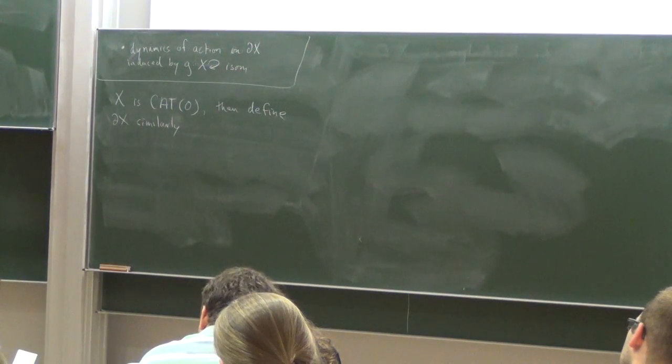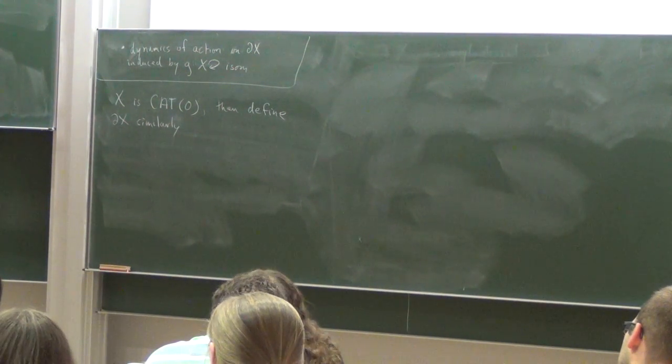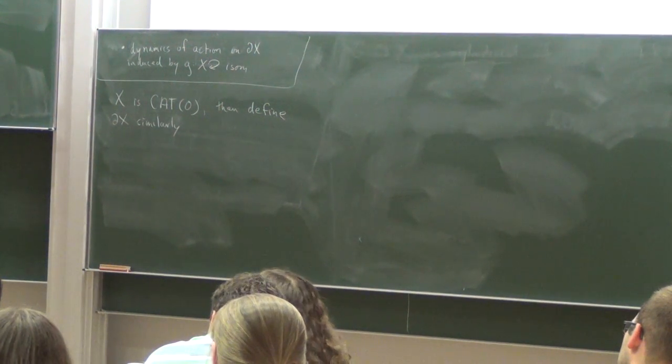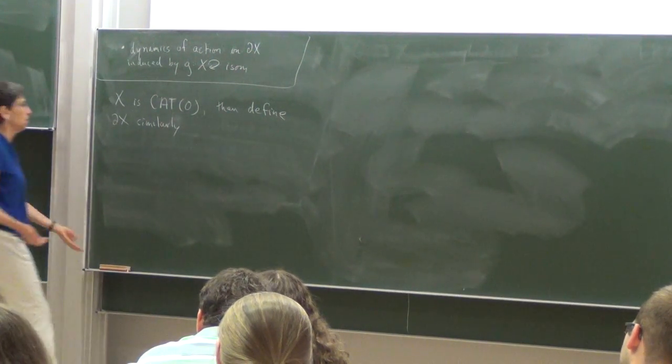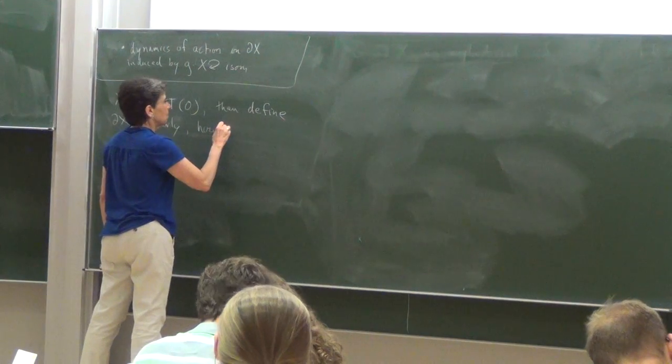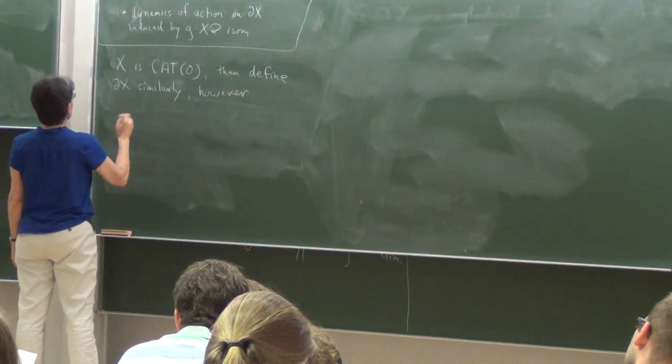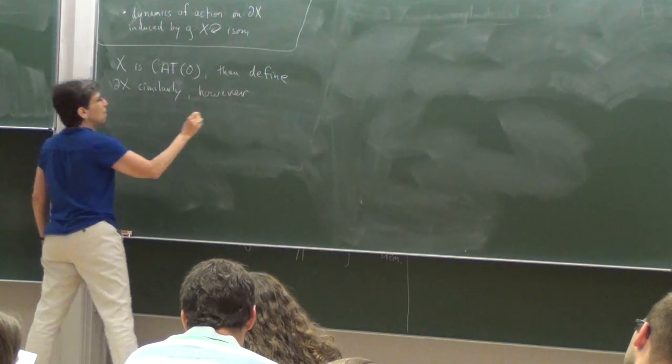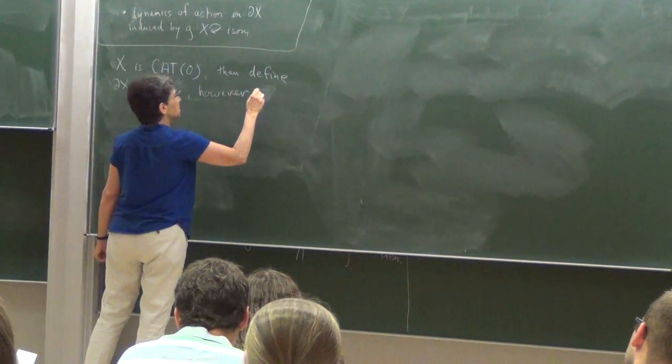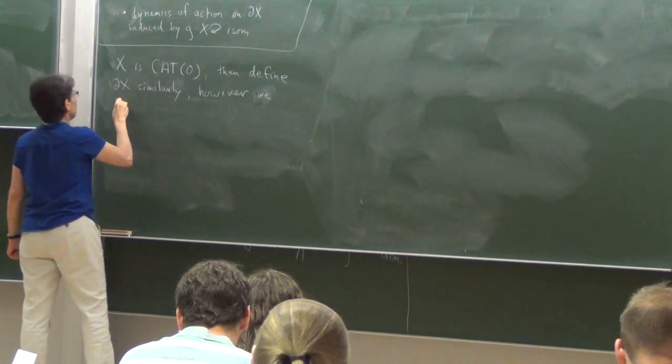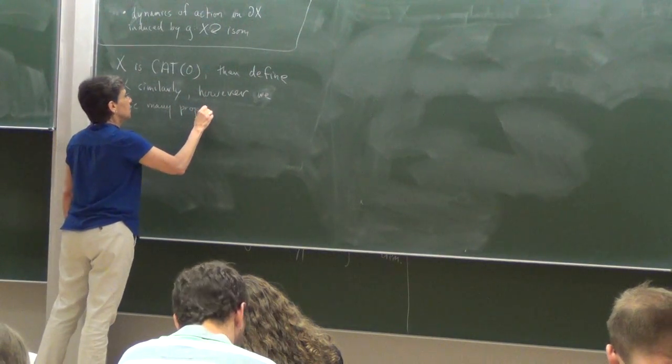But now the question is what properties do we have? So the problem is that we lose half of our good properties. Lots of things just don't work anymore. Very quickly, we lose them already in the CAT(0) setting. However, things don't work horribly. However, we lose many properties. In particular, these ones that I've talked about.